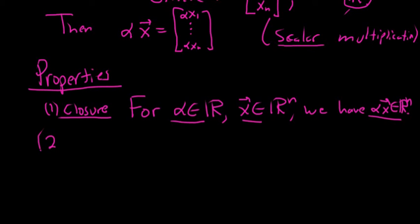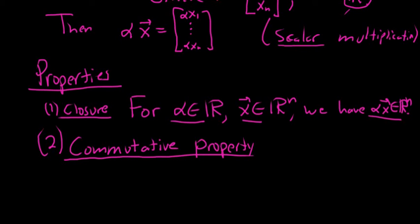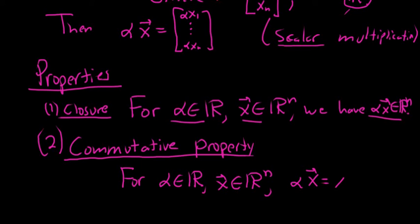There's a commutative property for scalar multiplication as well. The commutative property says that scalar multiplication actually commutes. For alpha in the real numbers and vector x in R^n, we have alpha x equal to x alpha. That's always true.